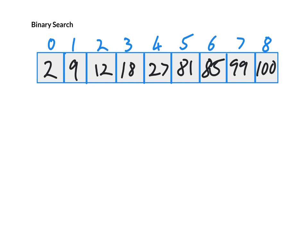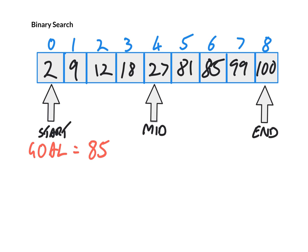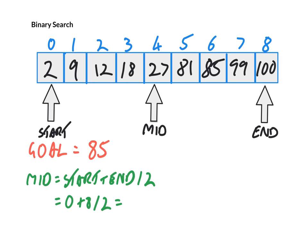Our goal state — the value we're looking for — is 85. What we are going to do is find the middle point of the list. We don't mean the middle value, but the actual middle place in the list. To do that, we need the start position and the end position. Our midpoint is calculated as start plus end divided by 2, so 0 plus 8 over 2, which equals 4.